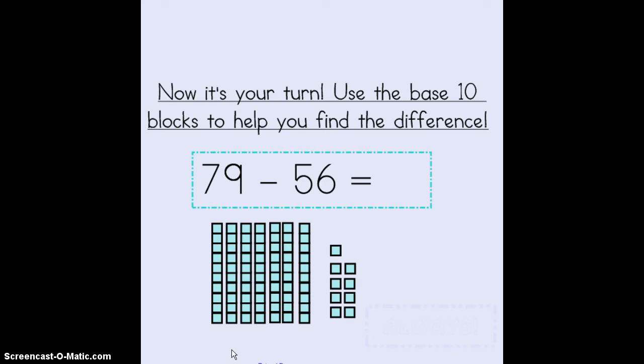I've already built the first number for you or the whole. One, two, three, four, five, six, seven tens. And one, two, three, four, five, six, seven, eight, nine ones. Your whole is 79.